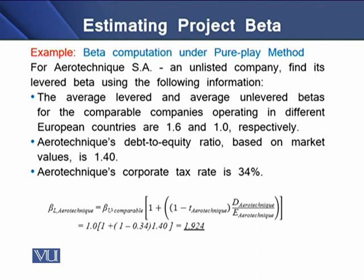We have another example to learn the computation under the pure play method. For Arrow Techniques SA, which is an unlisted company, we need to find its levered beta using the given information. The average levered and average unlevered betas for comparable companies operating in different European countries are 1.6 and 1.0 respectively. Arrow Techniques' debt-to-equity ratio based on market value is 1.40. Using market values means we are not using the book value of capital but rather market values of the capital structure.